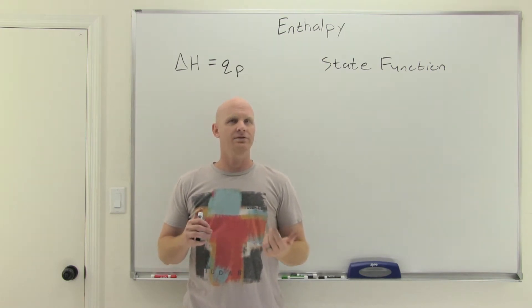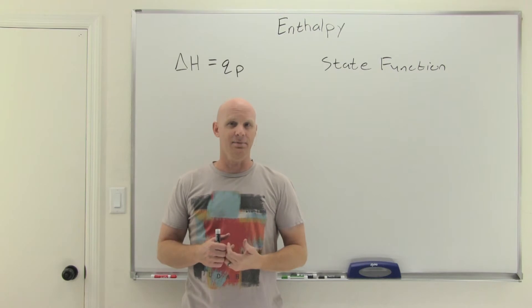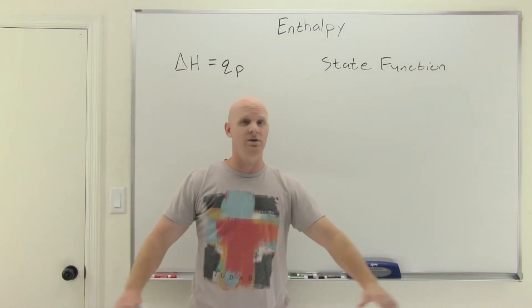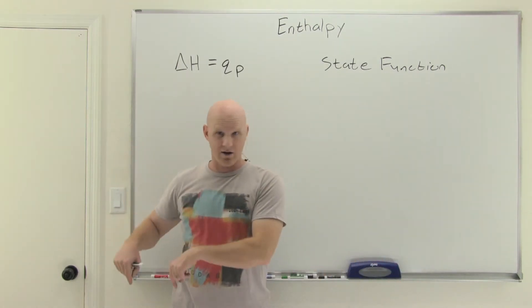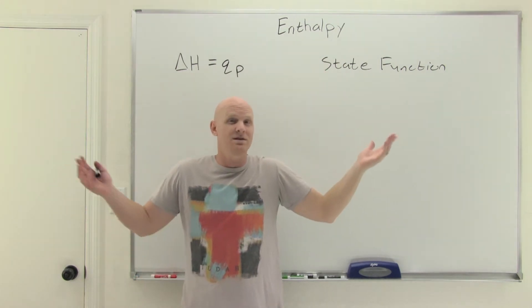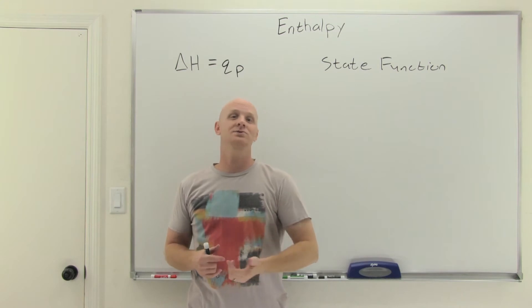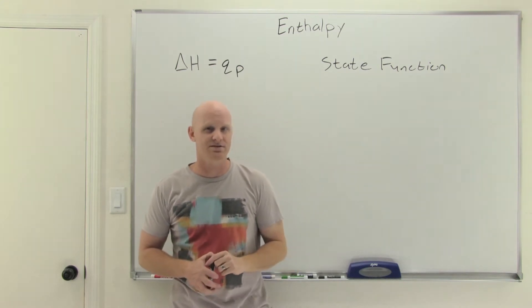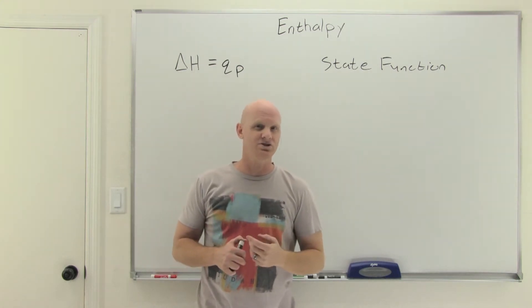Since we both started right here and then a week from now we both end up at exactly the same altitude at the top of Mount Kilimanjaro, our altitude change would be exactly the same. We both took two totally different routes, but because we started at the same place and end at the same place, that's all we need to know to calculate the altitude change. That's an example of a state function.